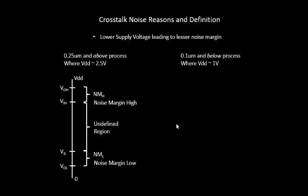When we go for a process which is 0.1 micron and below, the supply voltage used is 1V. This is because of various reasons related to the MOSFET device itself — 1V is sufficient to drive a MOSFET whose gate length or channel length is less than 100 nanometers (less than 0.1 micron). So this amount of voltage is pretty much enough for this particular MOSFET to work.